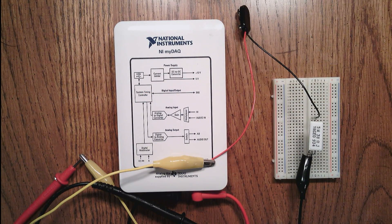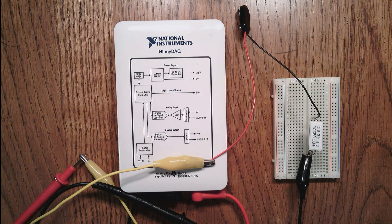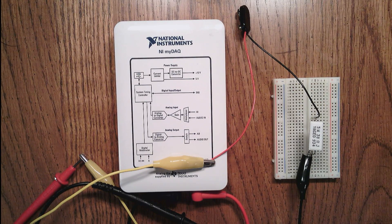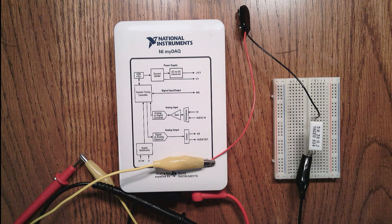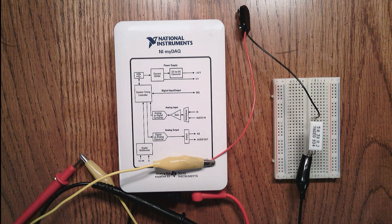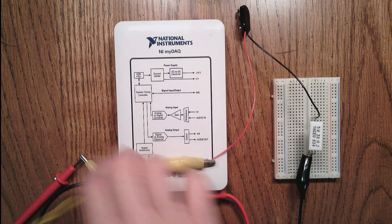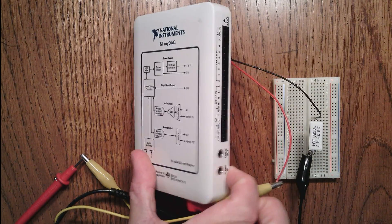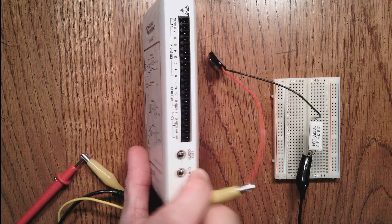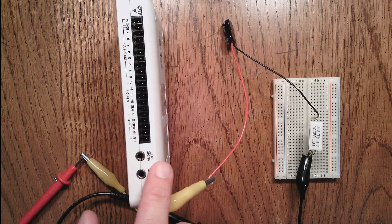With those connections now made, the next thing I'm going to do is configure the National Instruments MIDAC device so that we can measure the voltage or the potential difference that's developed across this resistive element. To measure the potential difference, we are going to use the analog input capabilities of the MIDAC device because the digital multimeter is already being used to measure the current.